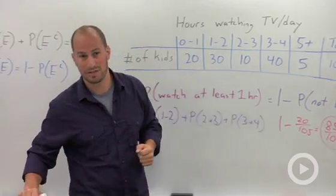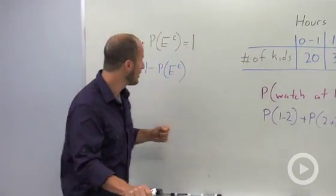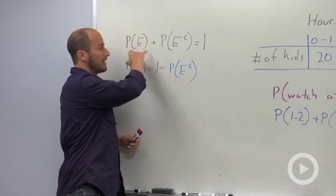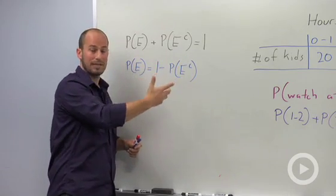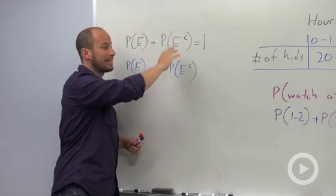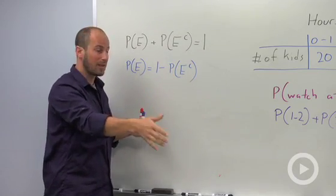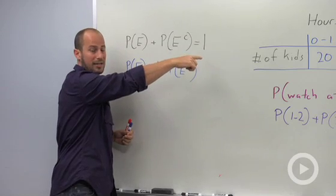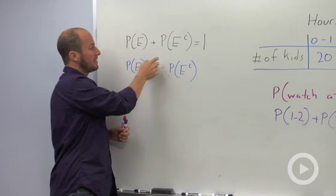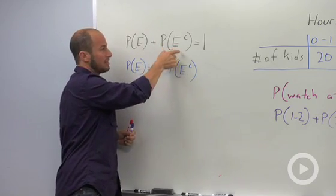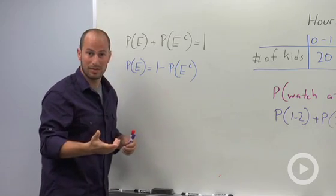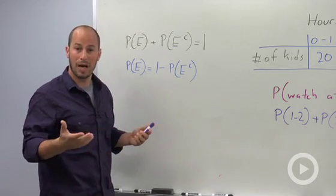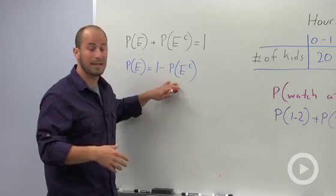We have a couple of general formulas for using this. Basically the main thing is that the probability of an event plus the probability of its complement, written E with this little c, is going to be one. The probability of everything has to be one, and then basically you can subtract over either of these to the other side, so you get the probability of the event is equal to one minus the probability of the complement. This example is pretty straightforward, but when we get to more complicated probabilities this can come in really handy.